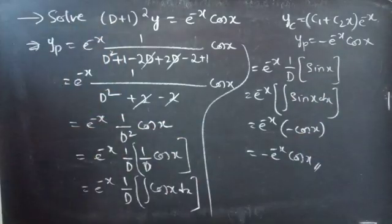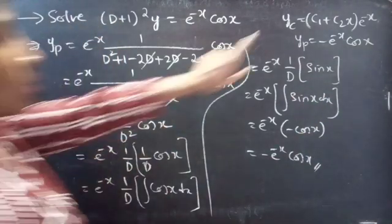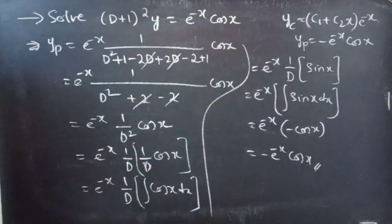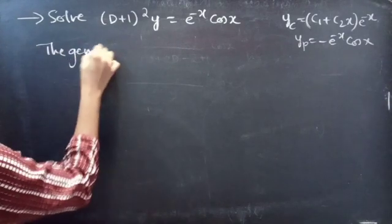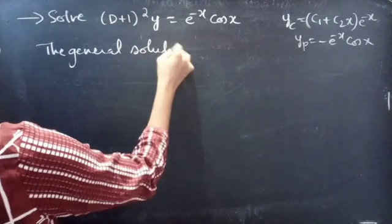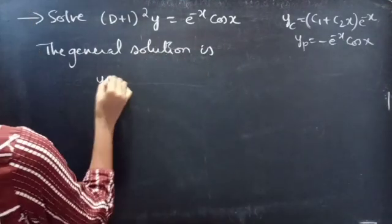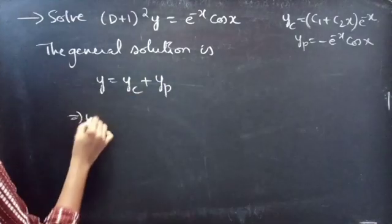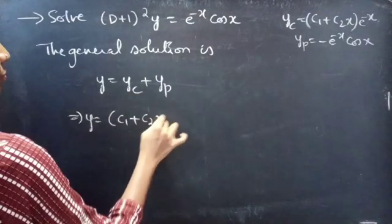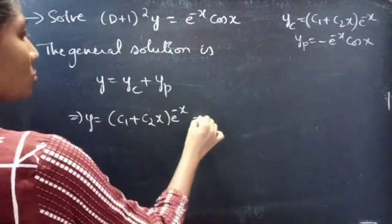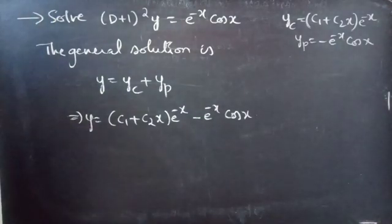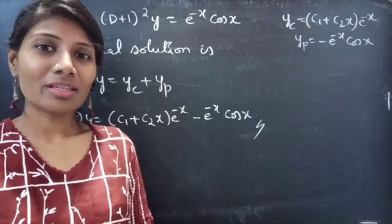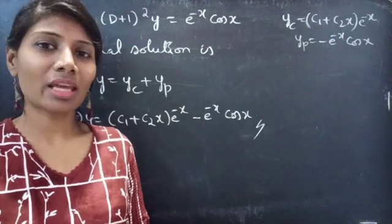Now we have both yc and yp, so the general solution is y = yc + yp = (c₁ + c₂x)·e^(−x) − e^(−x) cos x. This completes the problem. We have seen a problem from higher order linear differential equations. Hope you learned this — see you in the next video. Bye-bye!